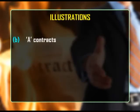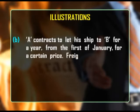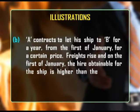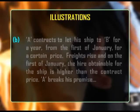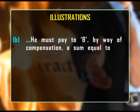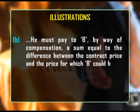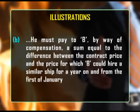Another illustration: A contracts to let his ship to B for a year from the 1st of January for a certain price. Freights rise, and on the 1st of January the hire obtainable for the ship is higher than the contract price. A breaks his promise. He must pay to B by way of compensation a sum equal to the difference between the contract price and the price for which B could hire a similar ship for a year from the 1st of January.